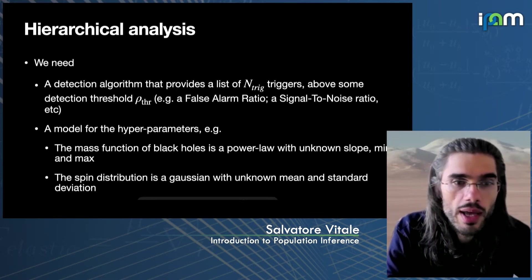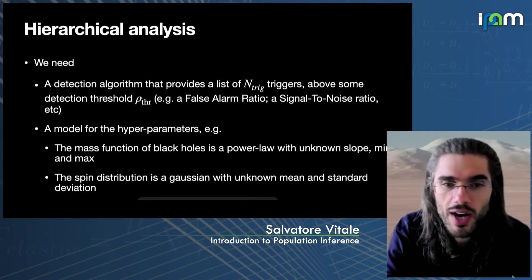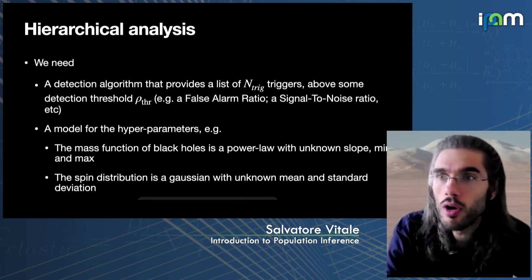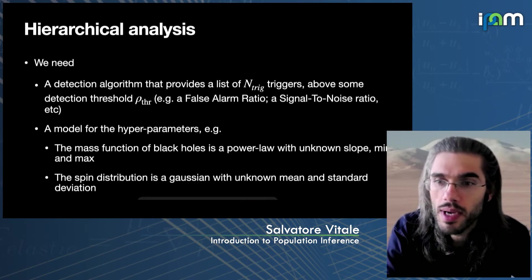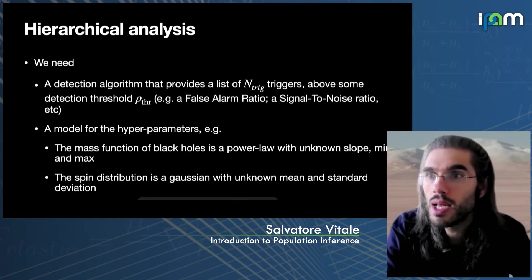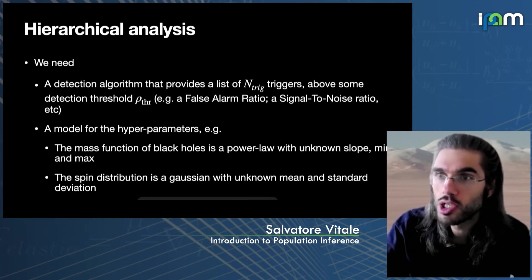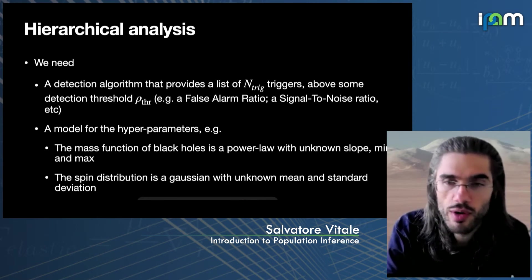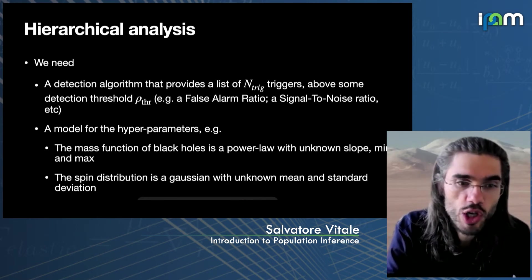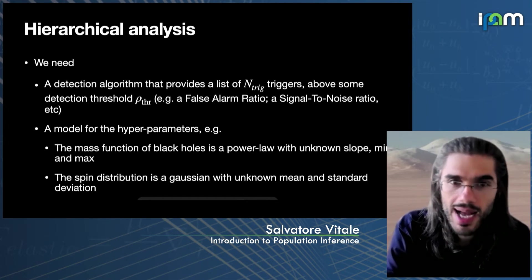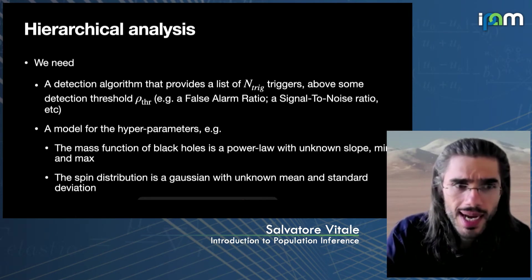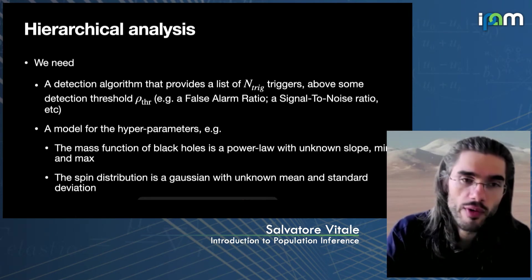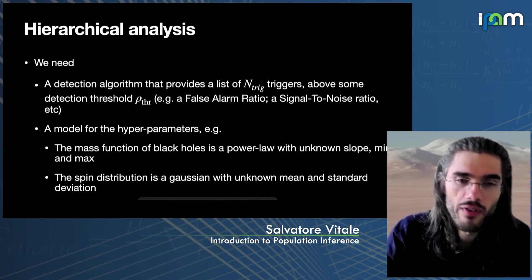For example, we may assume that the mass function of black holes is a power law. In that case, the parameters may be the slope of this power law, the minimum and the maximum value of the range where it can take values. We could assume that the spin distribution of black holes is a Gaussian, in which case the hyper-parameters would be something like the mean and the standard deviation. This is one of the required ingredients: a model for the population.